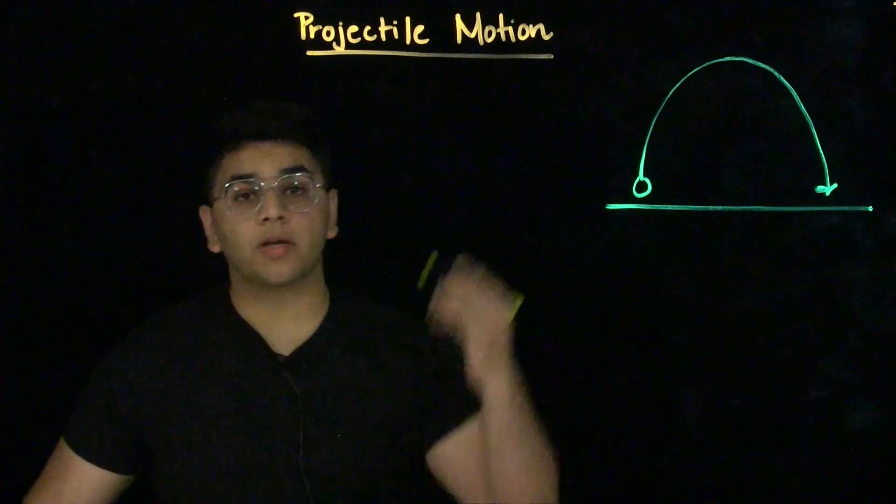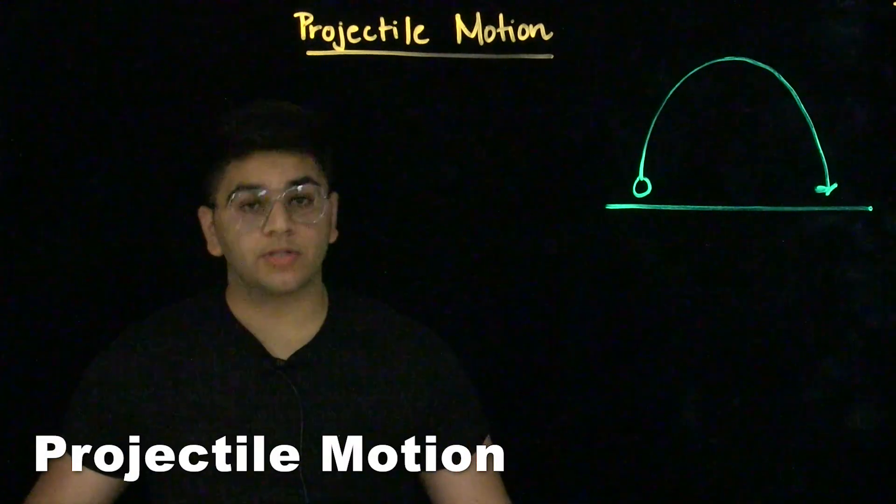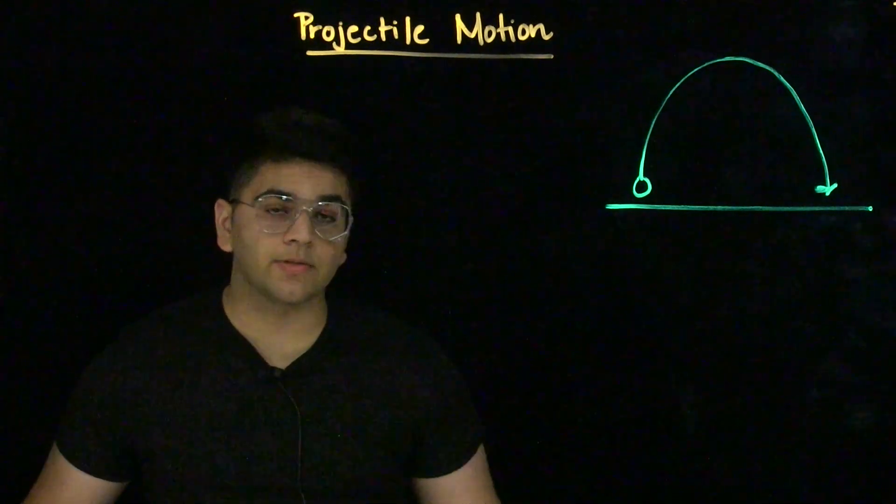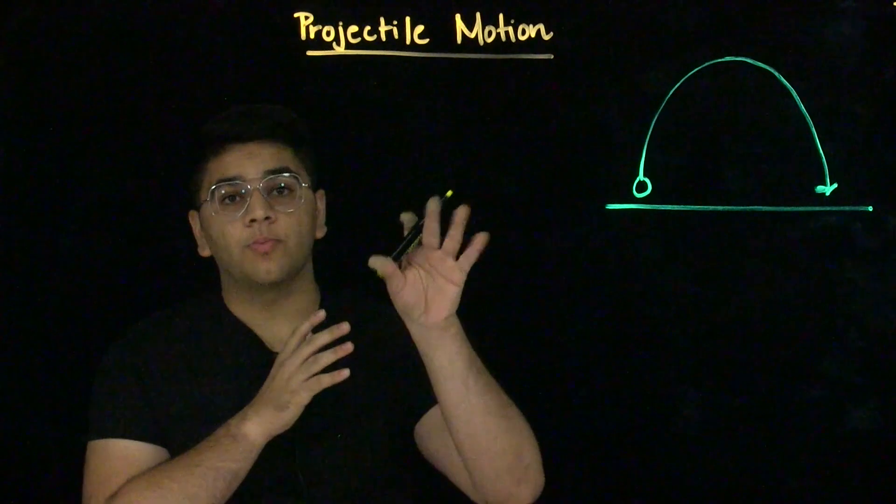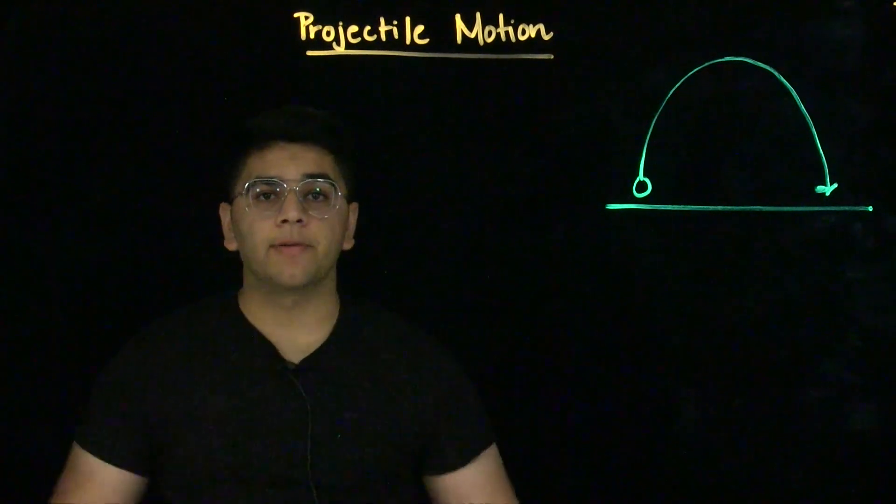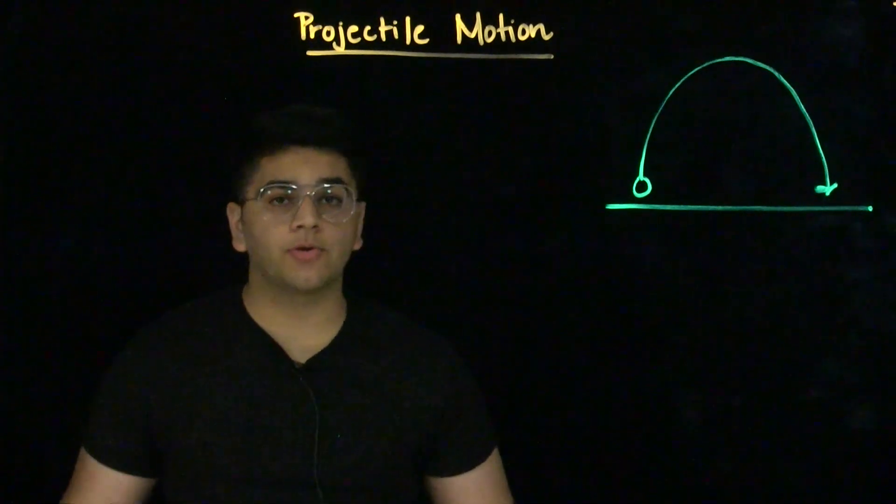Hello everyone. In this video, we will be talking about projectile motion. Projectile motion is motion in two dimensions. Examples of projectile motion would be shooting a basketball into a hoop or throwing a football to your friend. These are some very common examples of projectile motion.